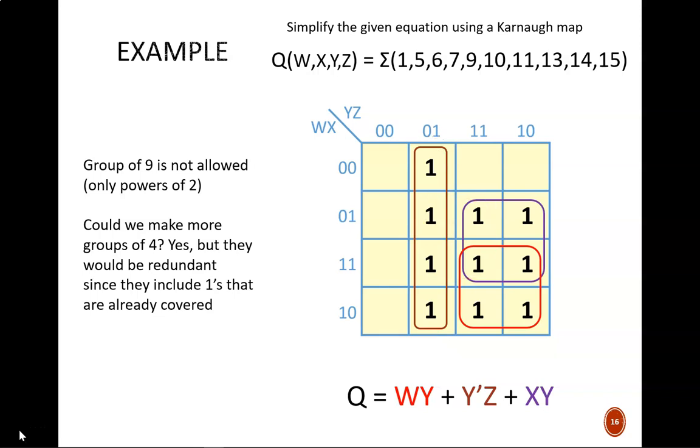All right, you should be well-equipped now to apply Karnaugh maps to simplify 3 and 4 variable Boolean equations in canonical SOP forms. But what about POS forms? And what about non-canonical forms? That's what the next video is about.